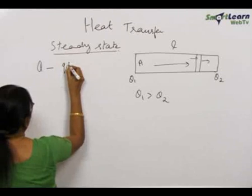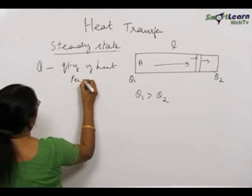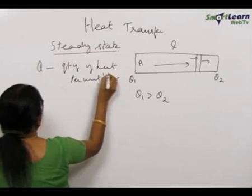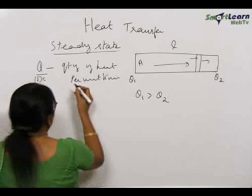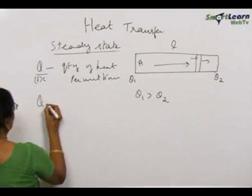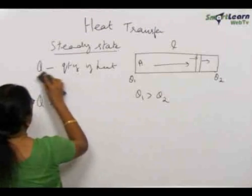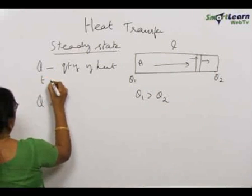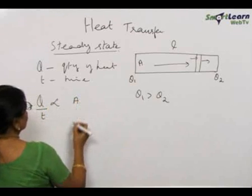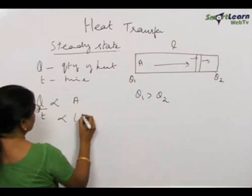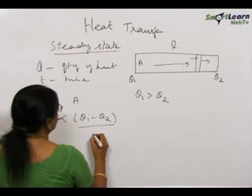Q is the quantity of heat per unit time, so actually it is Q energy by 1 second that is the meaning. Then it is found that Q by T is proportional to area of cross section and proportional to the difference in temperature and inversely proportional to the temperature gradient.